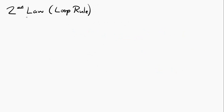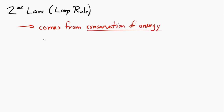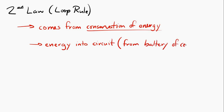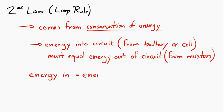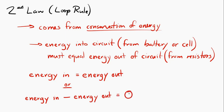The second law, the loop rule, comes from conservation of energy. The energy put into the circuit by the battery or source has to equal the energy taken out by resistors — things like light bulbs and heaters. If more energy went in than came out, the circuit would be destroying energy; if less went in and more came out, it would be creating energy. Neither is possible because of the conservation of energy.